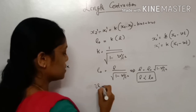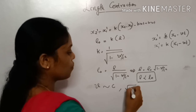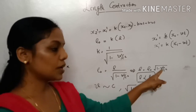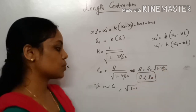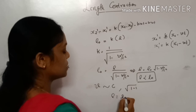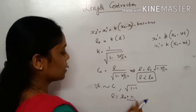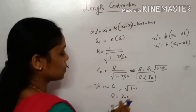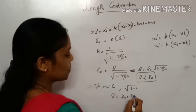If V is approximately equal to C, then the factor √(1 - V²/C²) approaches √(1-1) ≈ 0, meaning L = L0 multiplied by a very small quantity — the observed length becomes extremely small.